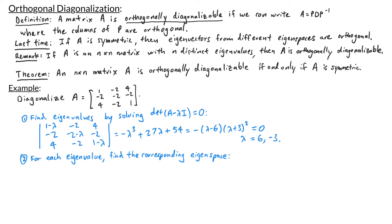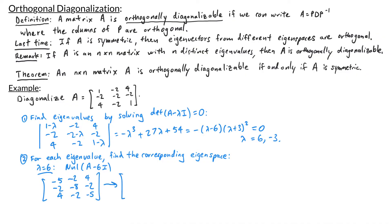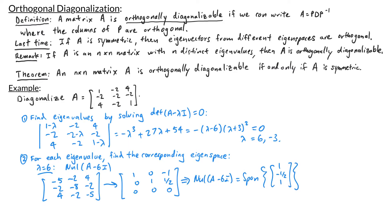For each eigenvalue, I want to find the corresponding eigenspace. Starting with lambda equals 6, I want to find the null space of A minus 6I. The matrix A minus 6I has entries negative 5, negative 2, 4, negative 2, negative 8, negative 2, 4, negative 2, negative 5. When we row reduce this, we get the matrix 1, 0, negative 1, 0, 1, one half, 0, 0, 0. This tells me that the null space of A minus 6I is the span of the vector 1, negative one half, 1. Multiplying by 2 to avoid fractions, this is the span of 2, negative 1, 2.